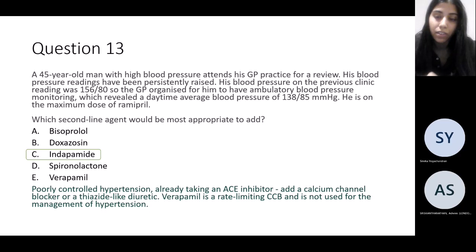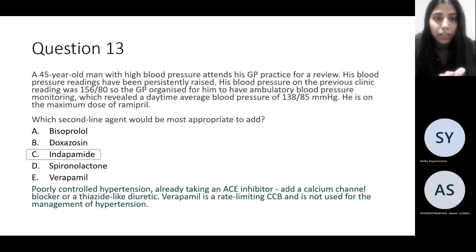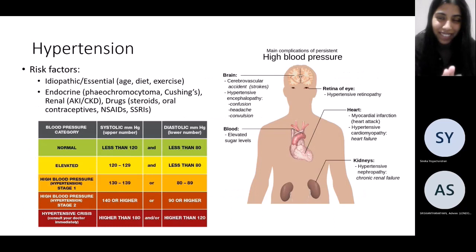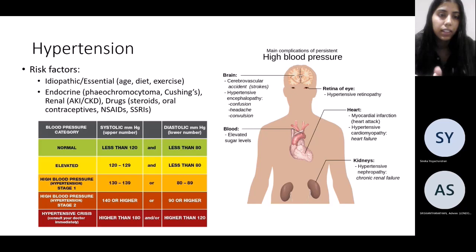The answer is indapamide. He's already on an ACE inhibitor, so your next choice is adding a calcium channel blocker or a thiazide-like diuretic. Although verapamil is a calcium channel blocker, remember you can't use verapamil for hypertension management — you want non-dihydropyridine CCBs are not the ones we use here for hypertension.